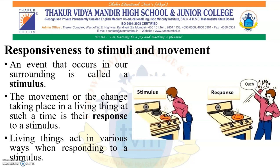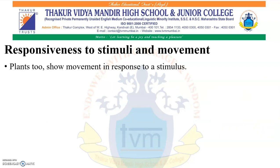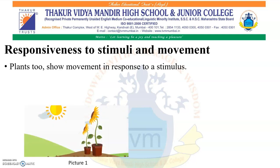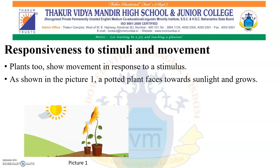Living things act in various ways when responding to a stimulus. Plants too show movement in response to a stimulus. As shown in picture 1, a potted plant faces towards sunlight and grows. The presence of sunlight is the stimulus, and the plant facing towards the sunlight and growing is the response.